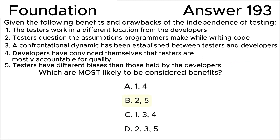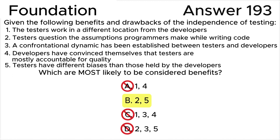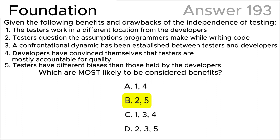In summary, the list entries showing benefits are 2 and 5. The correct answer is B.